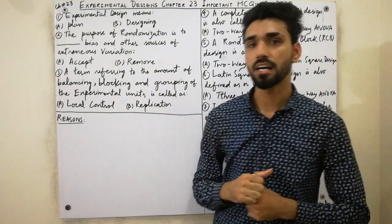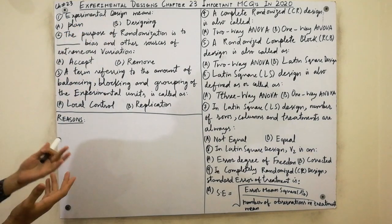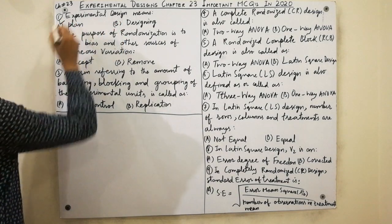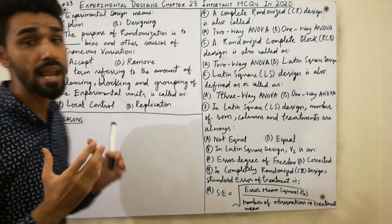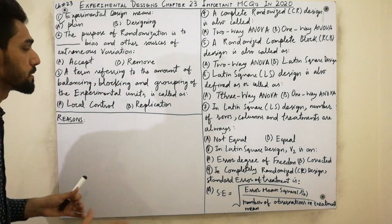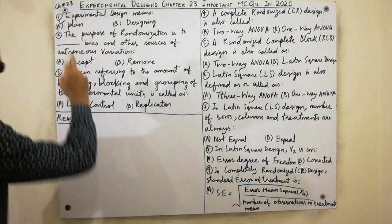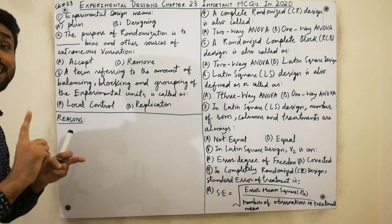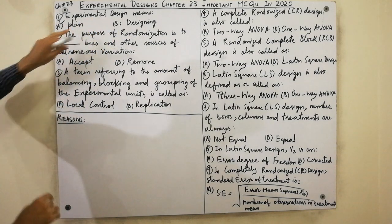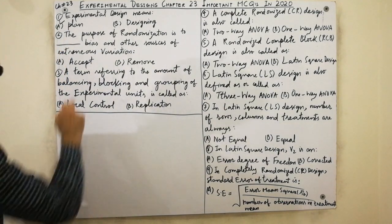Let's start the video. The first MCQ is on Experimental Design — very simple. Experimental design means a plan, which is the plan used to collect the data within a problem. When we use that plan, it is called an experimental design, which is used in calculations. Must remember: experimental design means a plan.